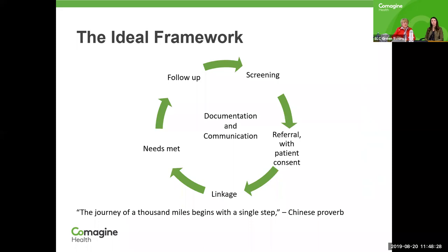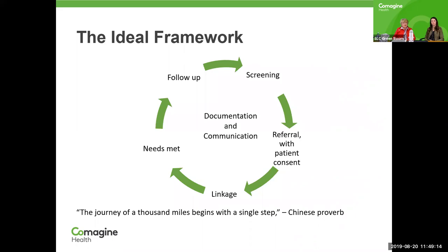We want to give you a framework or model to use in your practice for screening for social determinants of health. You would screen using one of your tools, identify some issues, and make a referral with the patient's consent. Link those patients to social services resources — hopefully their needs get met; if not, you go back and make another linkage; if so, you make some follow-up. This is a perpetual screening framework because people's needs for social services change over time, and it's important to keep screening as patient and family situations change.